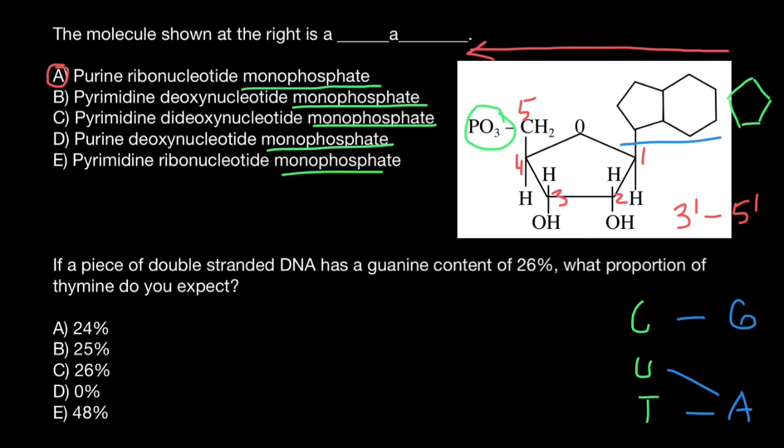Now, second question. If a piece of double-stranded DNA has guanine content of 26%, what proportion of thymine to expect? In order to solve this problem, everything you have to know is just Chargaff's rule, which states that in double-stranded DNA, we have cytosine and it base pairs with guanine, and adenine base pairs with thymine.